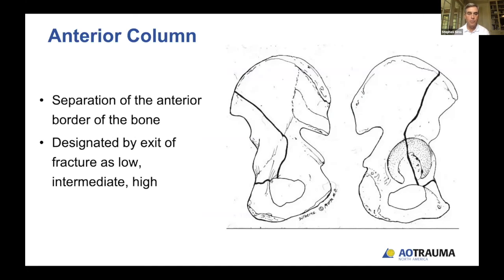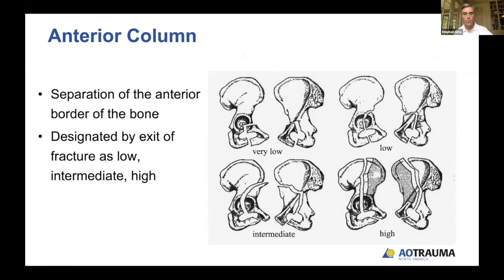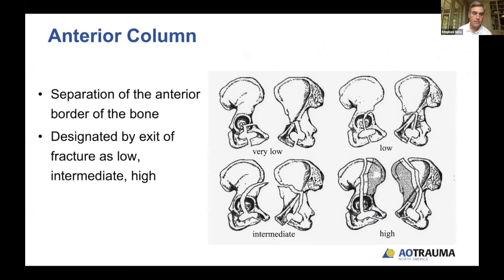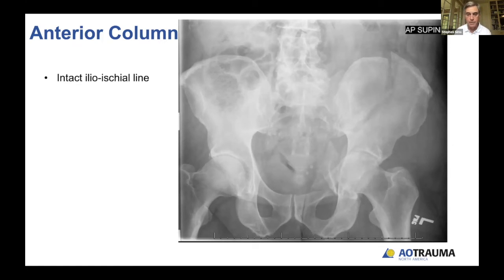The anterior column is a separation of the anterior border of the iliac bone, designated by where the fracture actually exits into the proximal portion. These can be called very low — exiting around the iliopectineal eminence or distal to it; low — going through the cillus gutter below the anterior inferior spine; intermediate — between the anterior inferior spine and the anterior superior spine; and high — exiting out through the iliac crest. On this view, you'll see the intact ilioischial line and then the break with the disrupted iliopectineal line going up to the iliac wing. The head moves anterior and medial — it's actually medial to the ilioischial line as opposed to the opposite side.